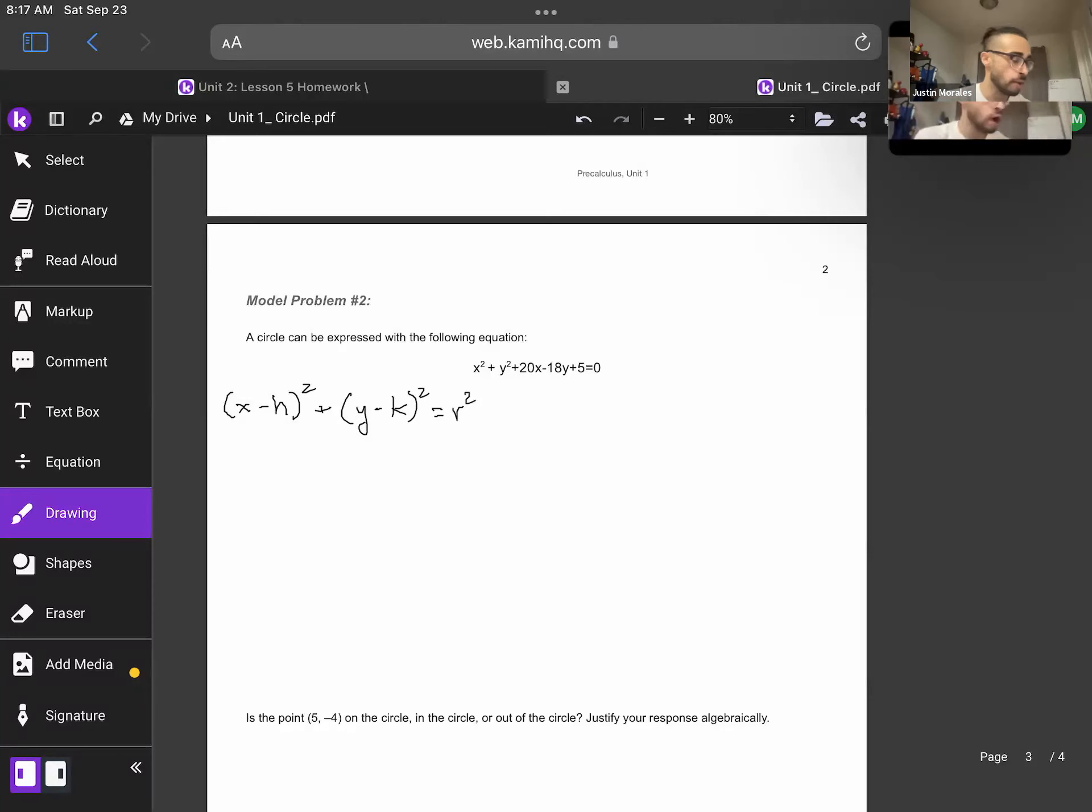And before we get into the actual problem, I just want to expand these little squared parts right here. That's going to end up being x² - 2xh + h² + y² - 2yk + k² equals r². So if you really notice what's happening, we have a bunch of x's, then a constant. We have a bunch of y's, then a constant, and then we're going to have our radius on the other side. So that is how I'm actually going to set up our problem.